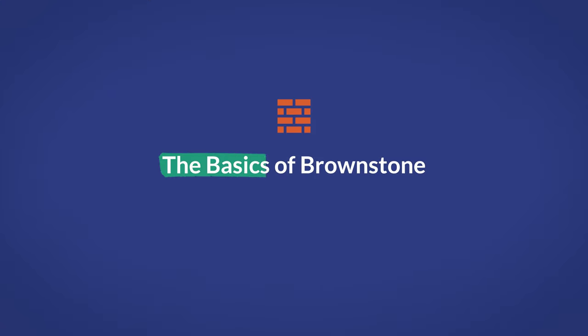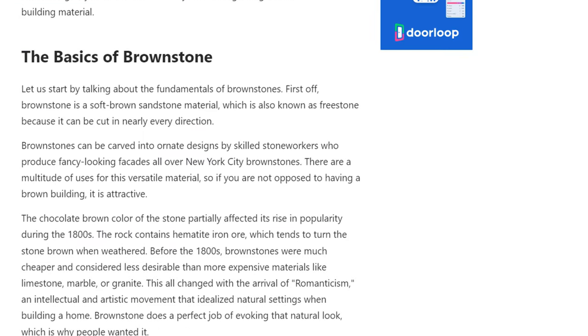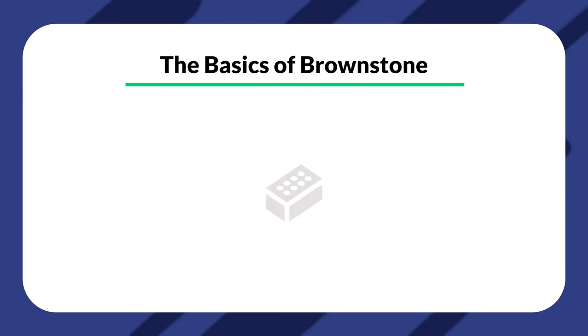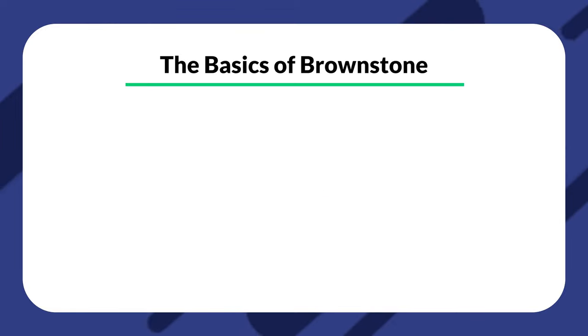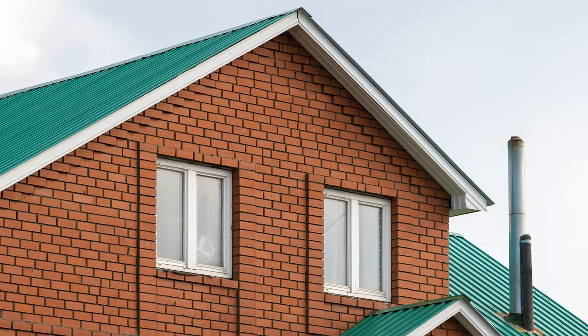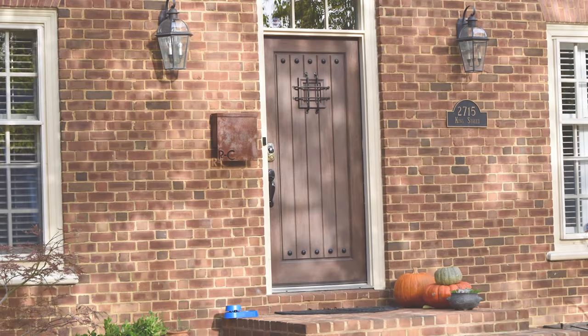The basics of brownstone. Let us start by talking about the fundamentals of brownstones. Brownstone is a soft brown sandstone material, also known as freestone because it can be cut in nearly every direction. Brownstone can be carved into ornate designs by skilled stone workers who produce fancy-looking facades all over New York City brownstones. There are a multitude of uses for this versatile material, and it is quite attractive.